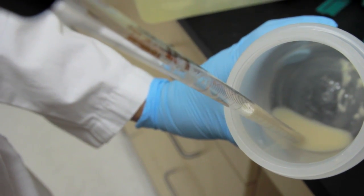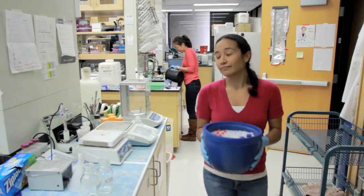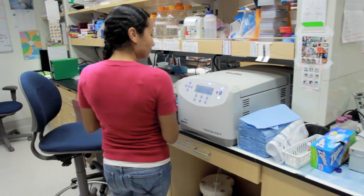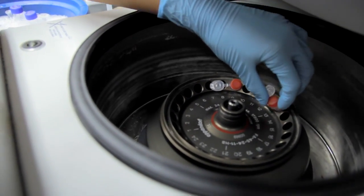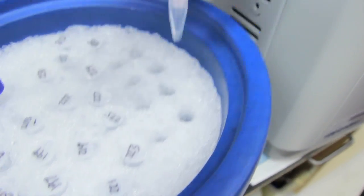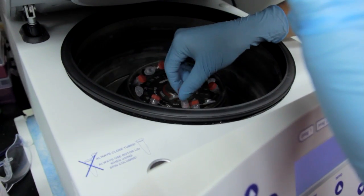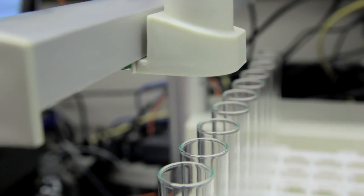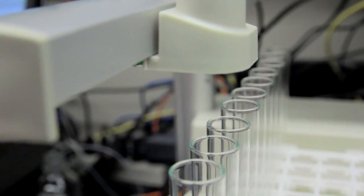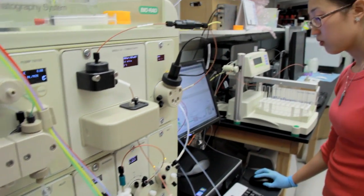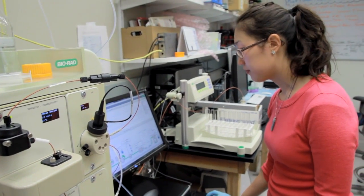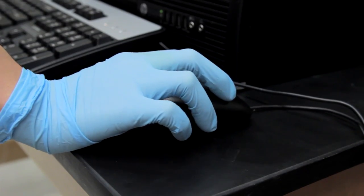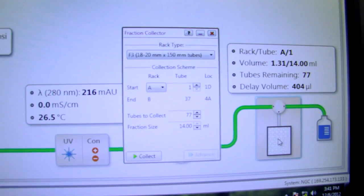One of the things that we typically will do often is actually make truncations or mutations of the components that we work with, and those will normally pose a different purification scheme for us. And so we have to evolve our purification schemes depending on the truncation or mutation that we're trying to make. And the NGC I think really allows us to switch between users and purification schemes very quickly and easily.